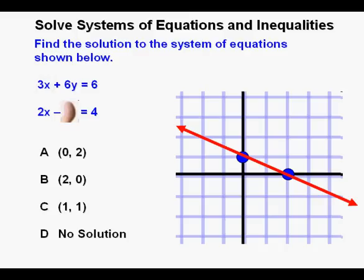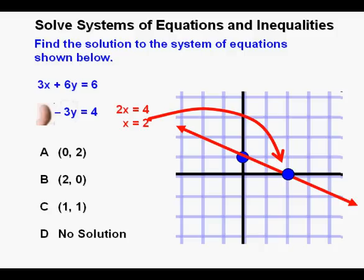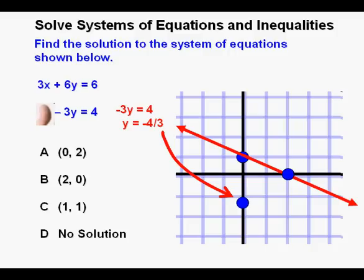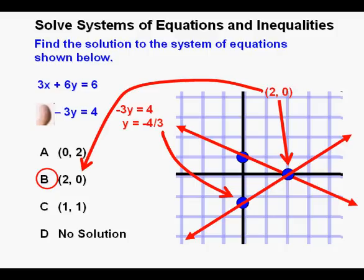Next we repeat the process for the second equation. Covering up the y term gives 2x equals 4, so x equals 2; we mark our x-intercept at x equals 2. Covering up the x term leaves negative 3y equals 4, giving y equals negative 4 thirds; we mark our y-intercept a little less than negative 1 on the y-axis. We draw our line through the points. We see the intersection of the two lines at the coordinate pair (2, 0), and we see the solution in answer B, so we circle B.